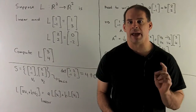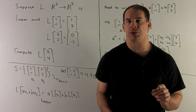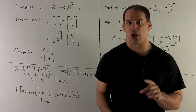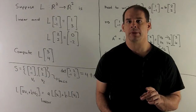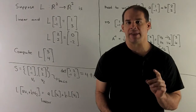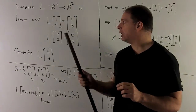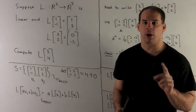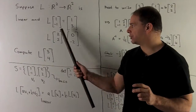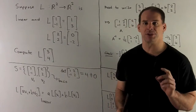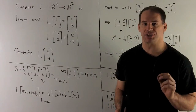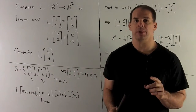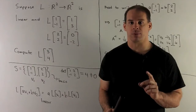Suppose we're given a map L from R² into R², which is also linear, and we have that L of (1, −1) is equal to (1, 3), and L of (2, 2) is equal to (0, −2). Compute L of (3, 4).